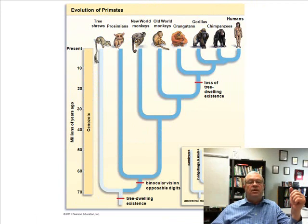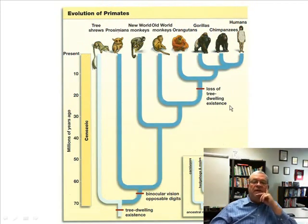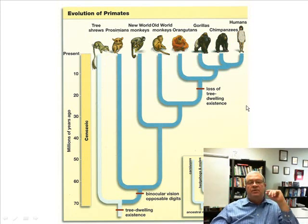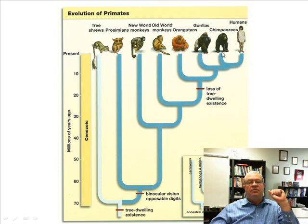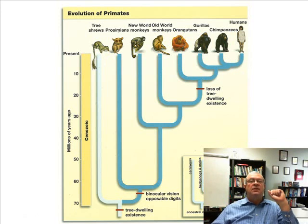Are people included in this concept? Certainly they are. According to this diagram, humans are most closely related to what other organism on this tree? Chimpanzees. Does it say humans descended from chimpanzees? No — it says that humans and chimpanzees share a common ancestor if you go back in time. Humans are somewhat less related to gorillas, orangutans, and so forth. People are included in this concept of common ancestry and descent with modification.